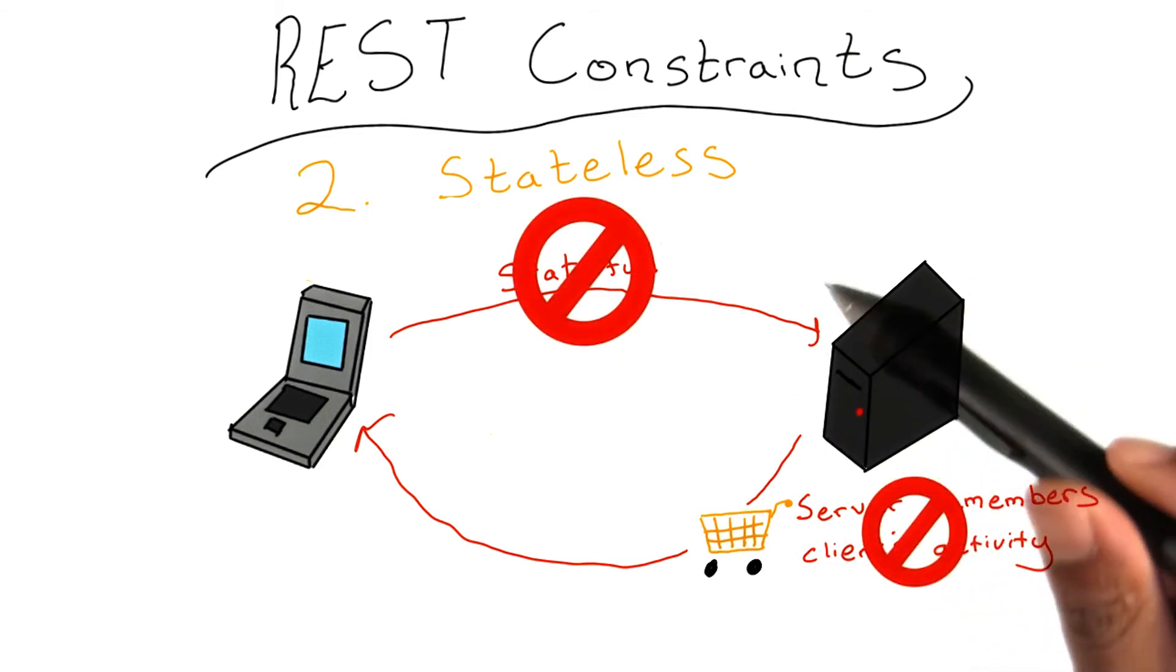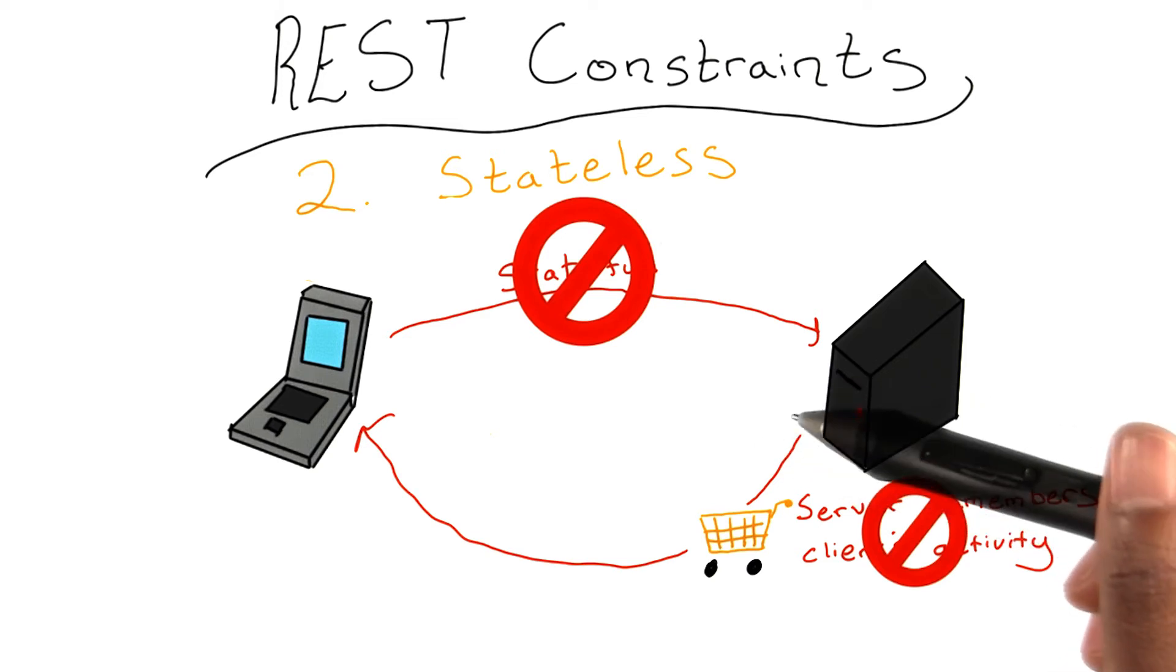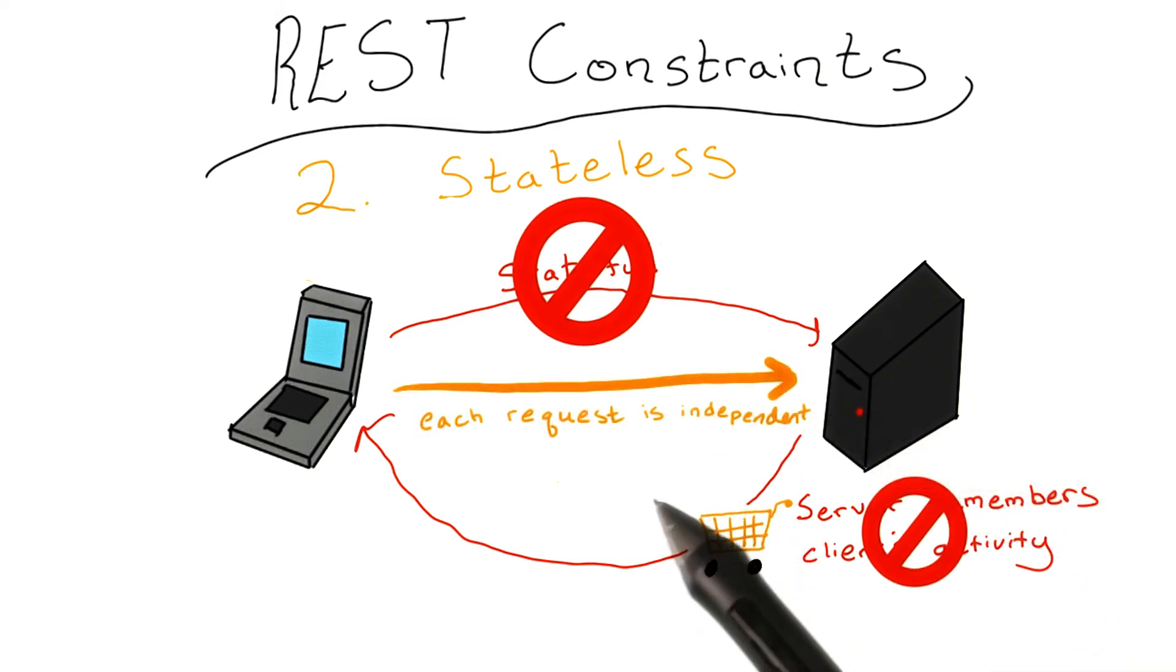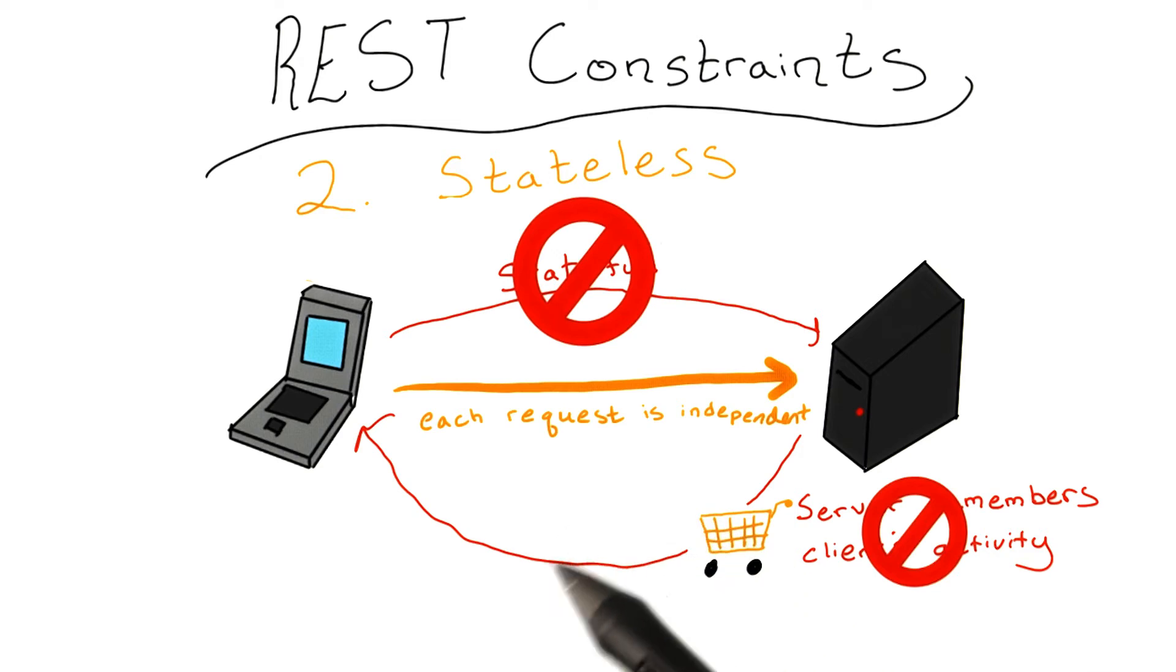...is not allowed to retain information about the state of another machine during the communication process. Each request from a client to a server must be treated as though it was the first request the server has ever seen from that client. A server should not remember its clients and readjust its state accordingly. The server may only give back the most up-to-date information about its state to the client and allow for modifications if the client is authorized to do so.